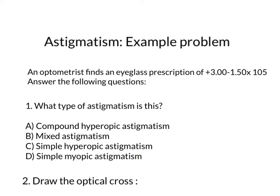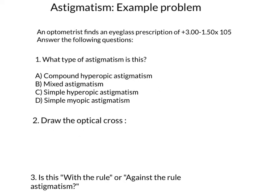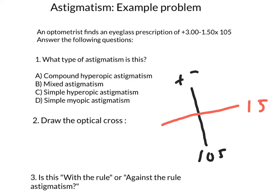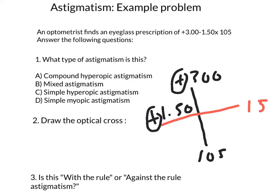Draw the optical cross. The optical cross will look something like this. The vertical meridian is shown in black and the horizontal meridian in red. The black meridian is at 105 degrees, and the red meridian is 90 degrees away, which is the 15-degree meridian. The black meridian is positive 3, and the red meridian is positive 1.50. Because both meridians are positive, you have compound hyperopic astigmatism.